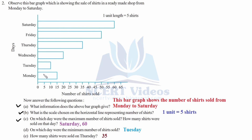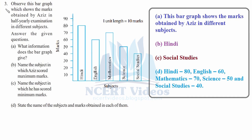The minimum is clearly visible — that is 10 shirts on Tuesday. For the last part, how many shirts were sold on Thursday: we drop a vertical line and it falls on 35, therefore 35 shirts were sold on Thursday. That was question number two.